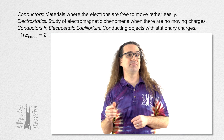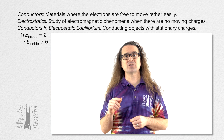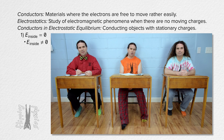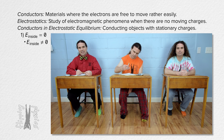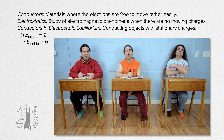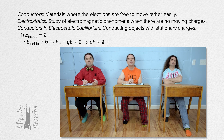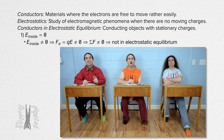Billy, what would happen if the electric field inside a conductor in electrostatic equilibrium were not equal to zero? If there were an electric field inside a conductor in electrostatic equilibrium, then the charges on the conductor would experience an electrostatic force equal to the charge times the electric field, the charges would experience an acceleration, and the conductor would not be in electrostatic equilibrium. Therefore, there must be zero electric field inside a conductor in electrostatic equilibrium. Well done, Billy.